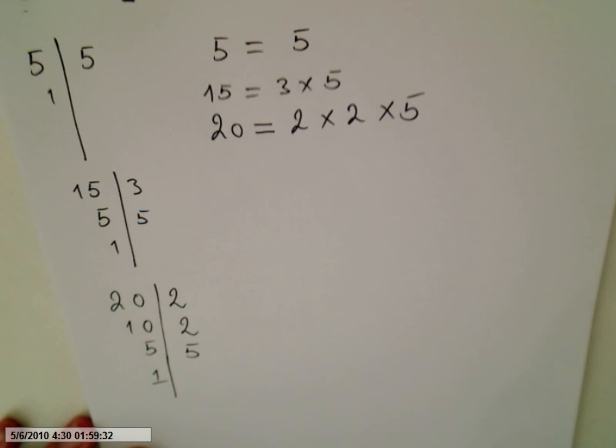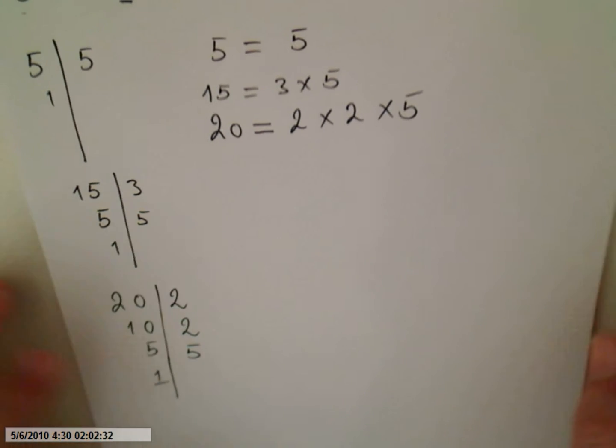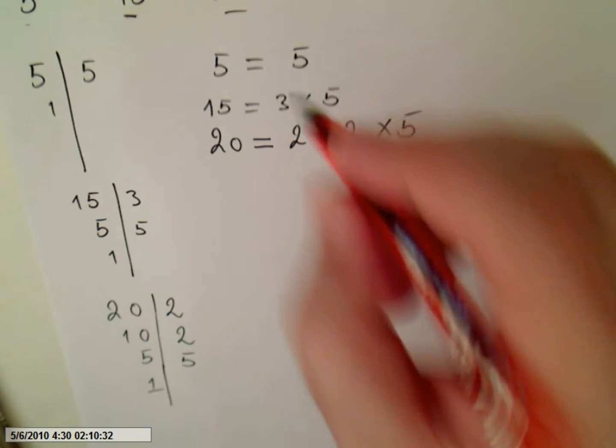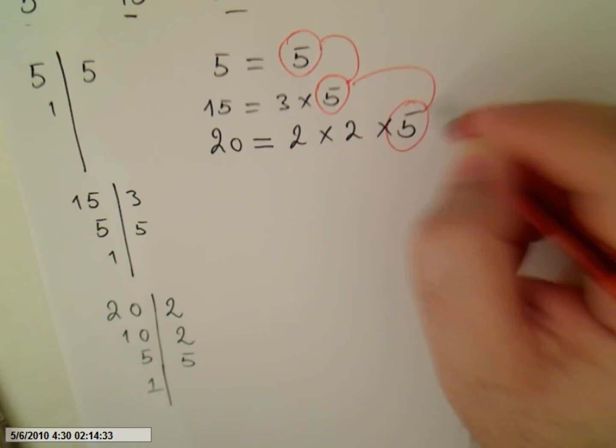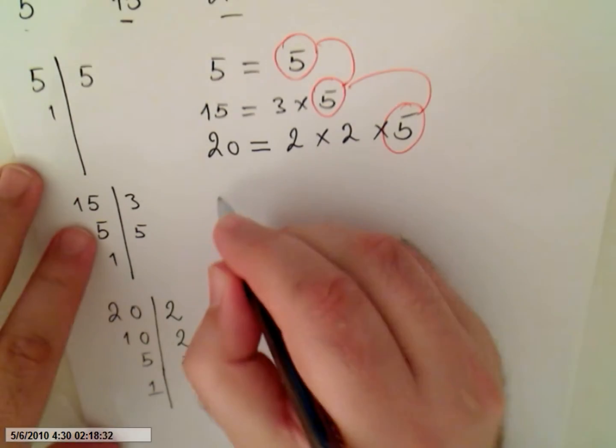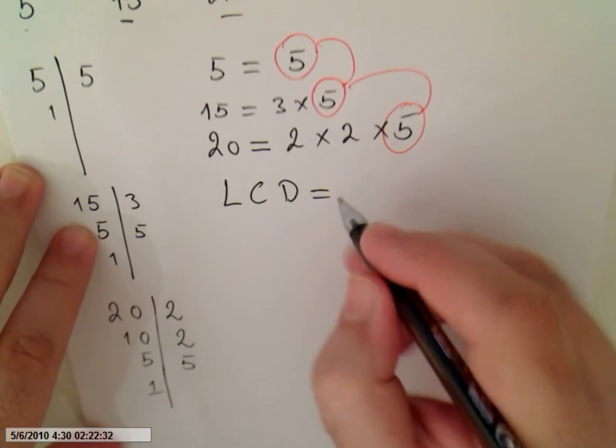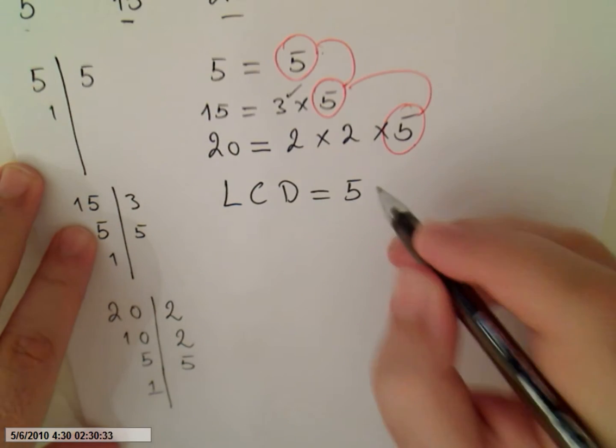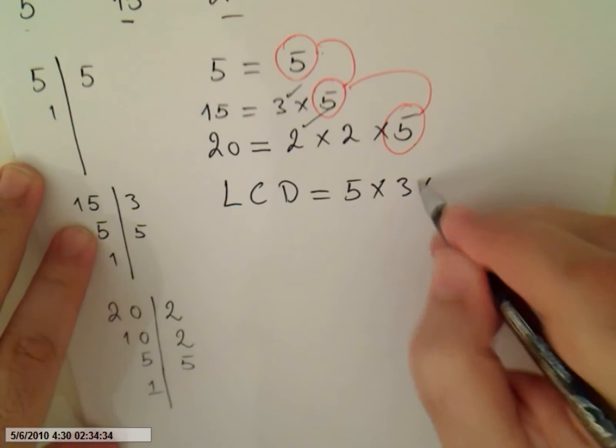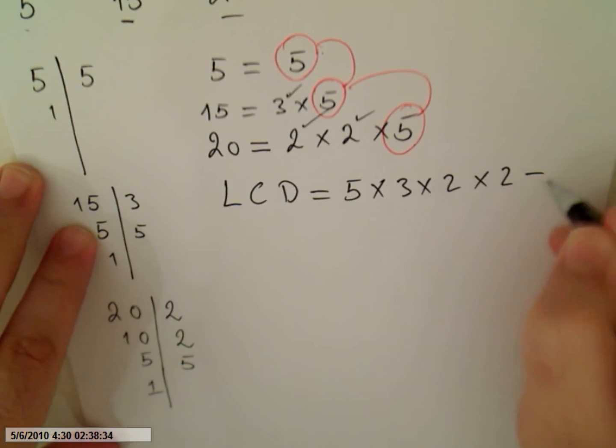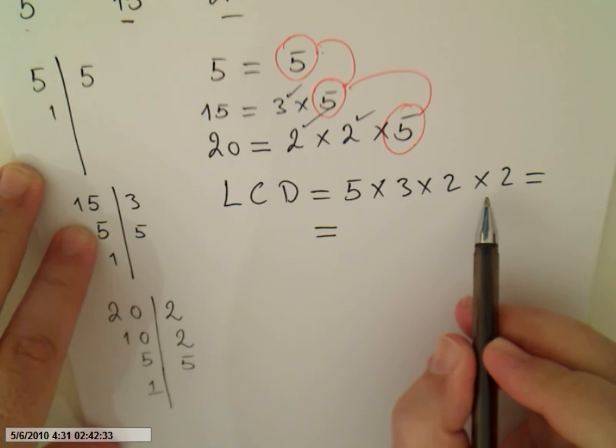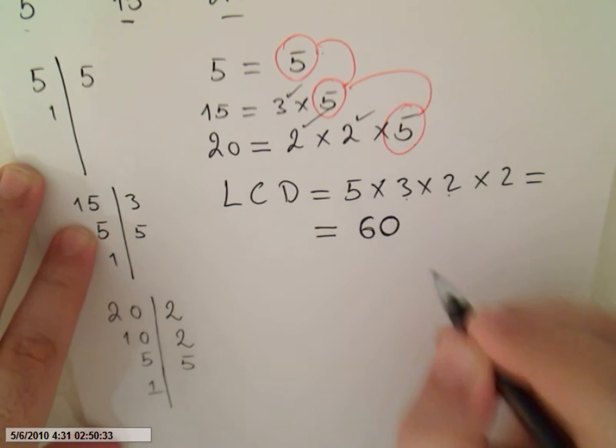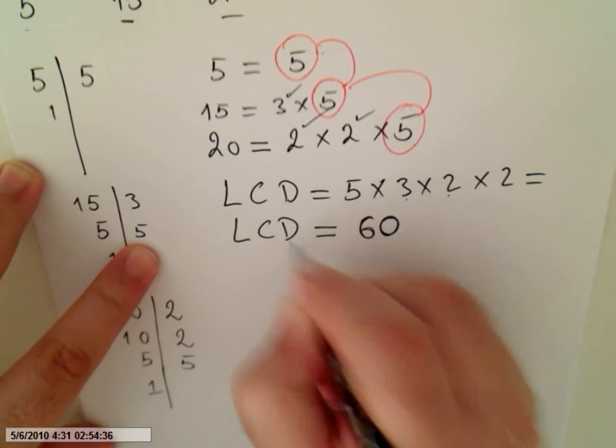Okay, so our common factors are there is only one common factor. It's 5, 5, 5. This is a common factor. So the least common denominator, it's 5, the common factor. And all the uncommon. So 3 is uncommon, 2 is uncommon, and the other 2 is uncommon too. So the least common denominator will be 2 times 2 is 4, times 3 is 12, times 5, 60. The least common denominator will be 60.